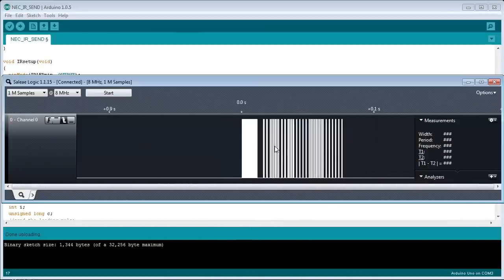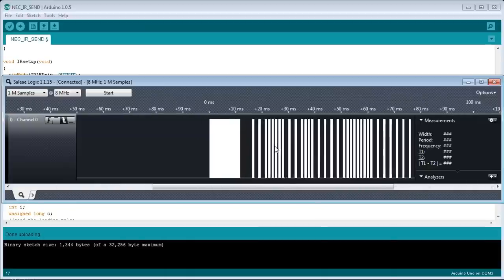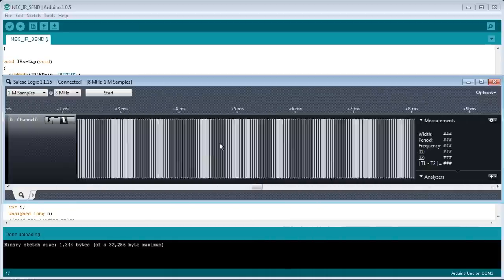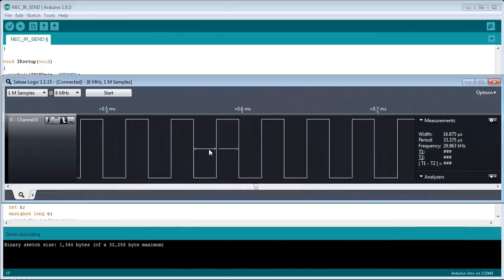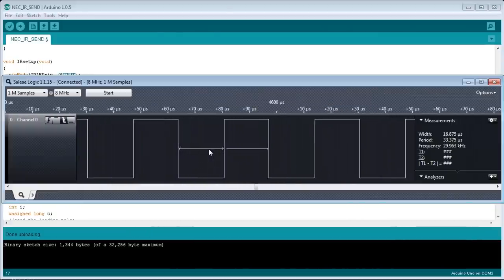And looky what we have here. We have our code. That's exactly the same as what we saw on the oscilloscope. And if we go in here, we can look at that carrier frequency of the leading pulse there. And if you have a look on the right-hand side, I can't move my cursor over, but it says the pulse width is 16.8 microseconds, and the frequency is 29.9 KHz. Nowhere near the 38 KHz that we actually need. No wonder it doesn't work. Why?